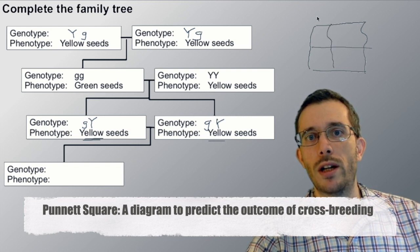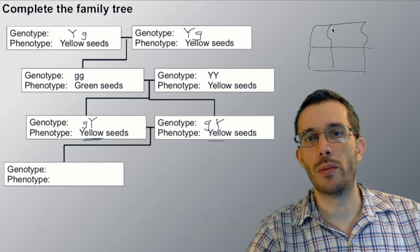And then on one side you write the genotype of one of the parents. So here green and here yellow. And on the other side you write the genotype of the other parent. And now we do the combination.